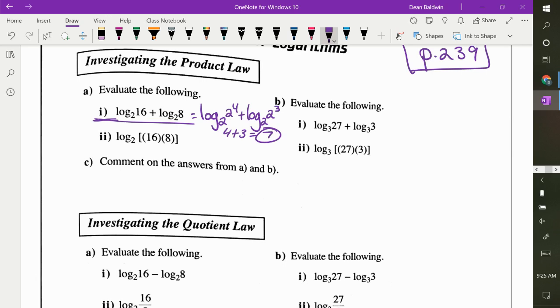If I asked you to do the one right below it, you do the same thing. 16 is 2 to the 4, 8 is 2 cubed. What do you do if you're multiplying with the same base? What do you do with the exponents? Add. So I get... What does that equal? 7. They're the same.